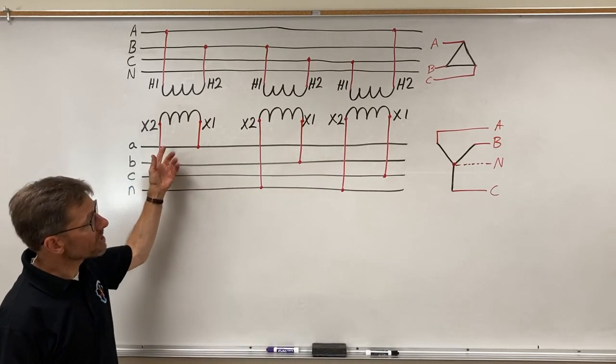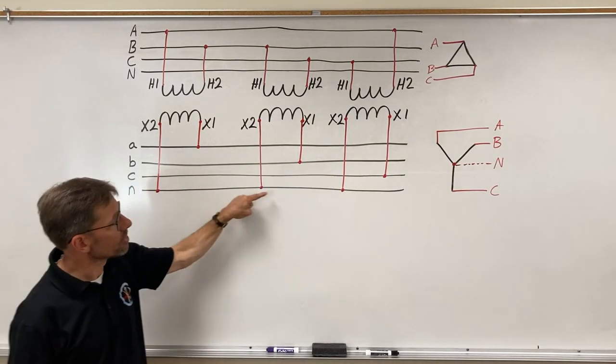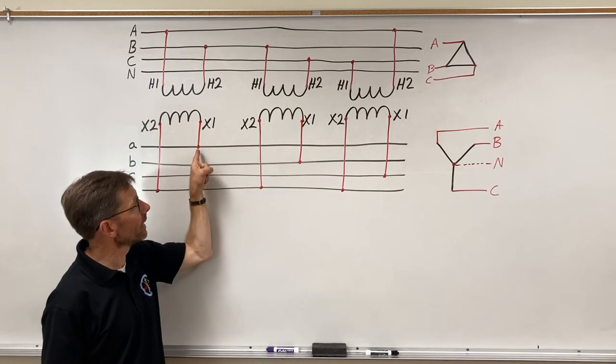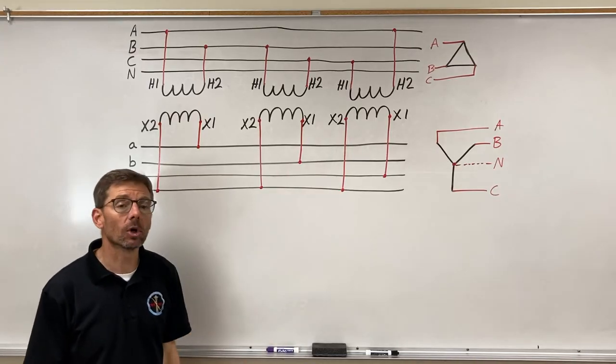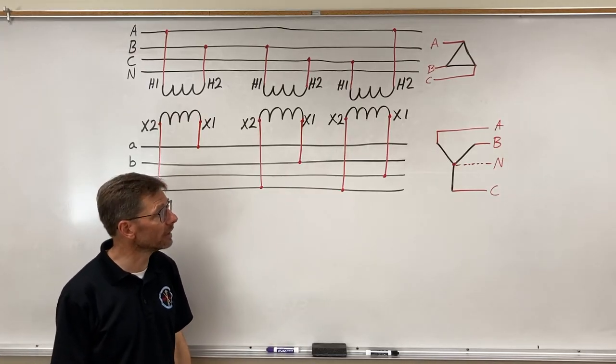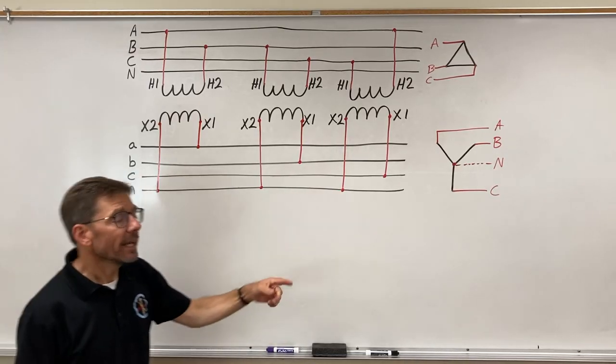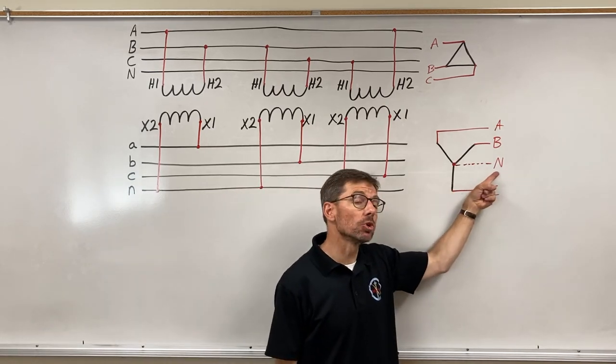So one side of each winding goes to the neutral, and the other side of each winding goes to its own one wire going out—its own line. Now in the code, we generally refer to this neutral as a grounded conductor.